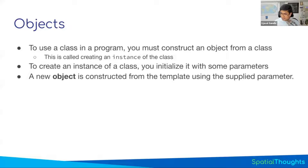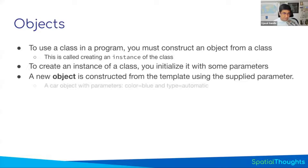This is called constructing an object from a class, and it's very important. Many times when you're trying to customize or write something, you'll say, I found the class that does this work, and you try to use it — you'll get an error because it's just a class. You have to construct an object, and then only you can use that.